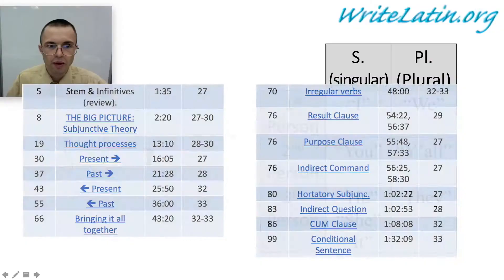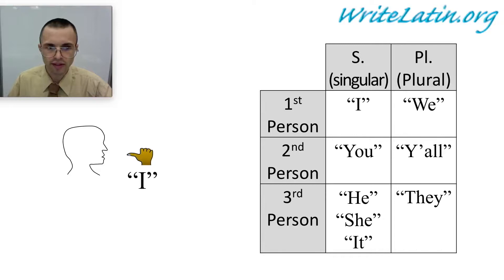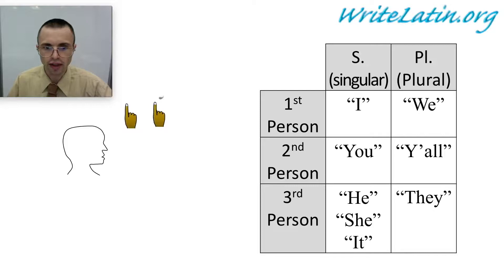Before we start, we need to review what the symbols mean. This symbol means: I form, you, he, she, it, we, y'all, they.